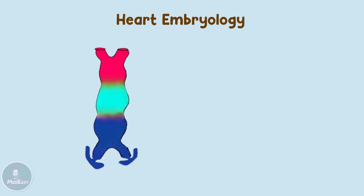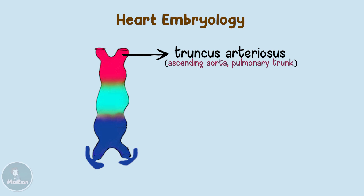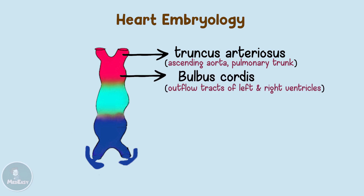From the top we begin with the truncus arteriosus, which gives rise to the ascending aorta and pulmonary trunk. Then we have the bulbus cordis, which gives rise to the smooth parts or outflow tracts, meaning the areas close to the aortic and pulmonic valves that lead into the aorta and pulmonary trunk.